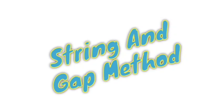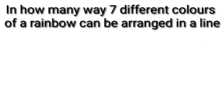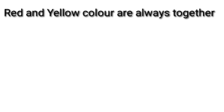We will discuss the string and gap method as we solve the questions. First question: in how many ways can seven different colors of a rainbow be arranged in a line? Our answer will be 7 factorial. Next part: red and yellow color are always together.